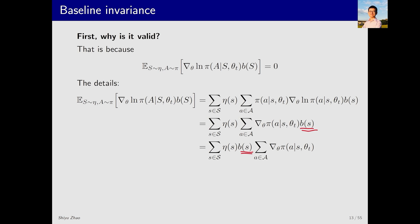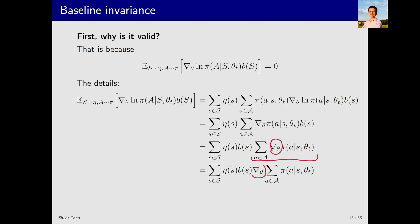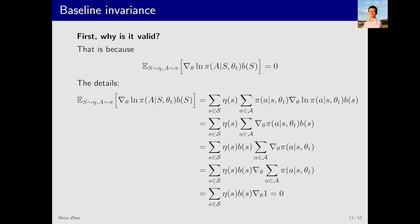Hypothetically, if the baseline B were a function of A, we couldn't move it to the front, and introducing the baseline would change the expectation. So the key point here is that B must only be a function of S, and it must not depend on A. Furthermore, we can take the gradient outside the summation. For state S, we sum over all possible actions A, and the probability distribution for the actions sums to 1. Therefore, when we take the gradient of 1, since the derivative of any constant is 0, the equation is valid.